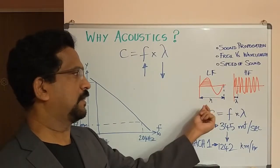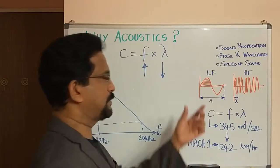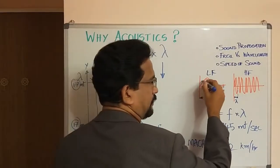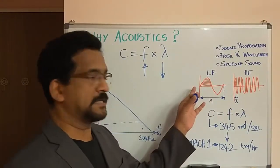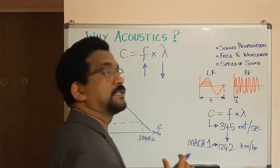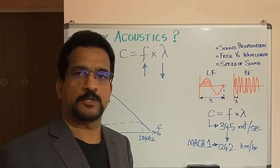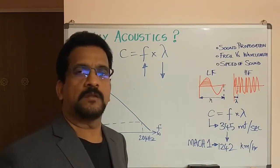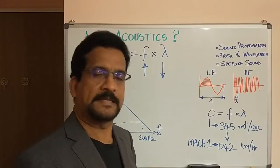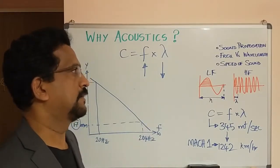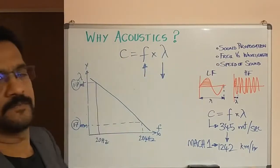For low frequency, the wavelength is much expanded, and the area under the curve is much higher compared to high frequency. This means the energy in a low frequency wave is much higher, and the energy in a high frequency wave is much lower. In practice, we need more power to produce low frequency sound, and less power or energy to create high frequency sound. These are the relationships between frequency, wavelength, and the speed of sound.